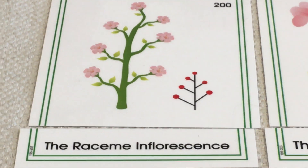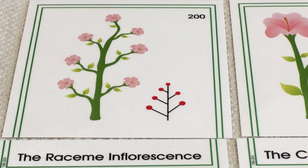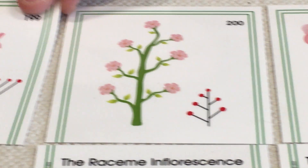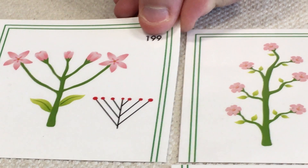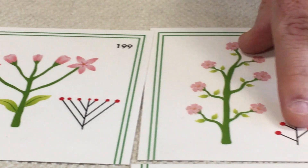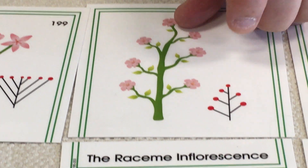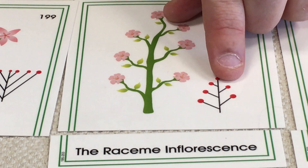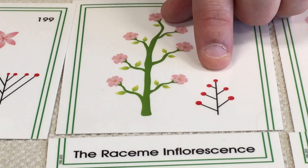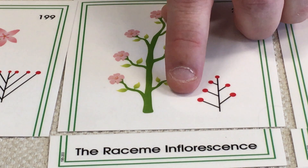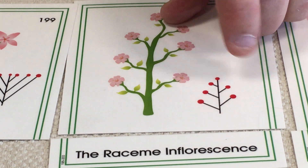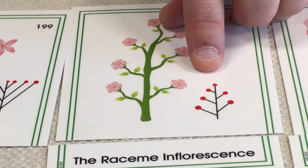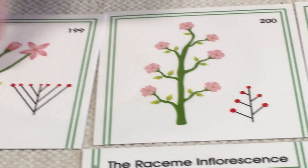Going down here now, we have the raceme inflorescence. This is arranged very similar to the corymb, but notice one difference. It has one major peduncle just like all the others, but this one has the pedicels attached alternating — they're not parallel, they're not attaching at the same points anymore. Now you get one to this side, one to that side, one to this side, in an alternating pattern. So you can see the difference between those two.